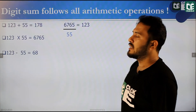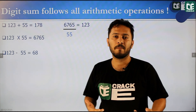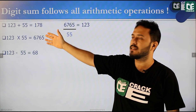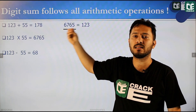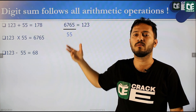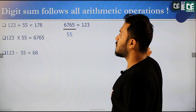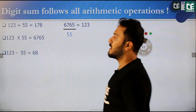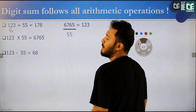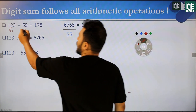The digit sum follows all arithmetic operations. For addition: LHS numbers and RHS numbers are equal, and we will verify it. 1, 2, 3 — that is 6. Then 55: 5 plus 5 is 10, digit sum is 1.